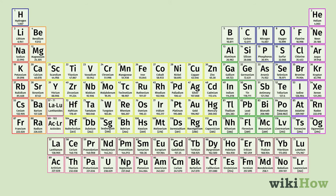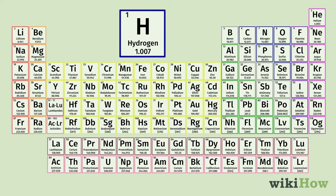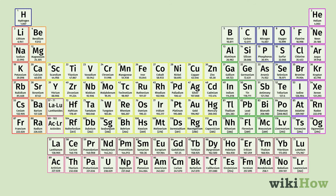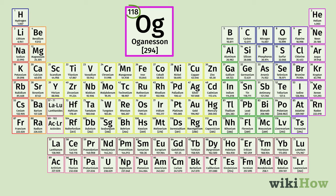Each element has its own atomic number, which represents the number of protons in one atom of the element. For instance, the first element in the periodic table, hydrogen, has an atomic number of 1, because a hydrogen atom has only one proton. At the other extreme, an atom of the synthetic element oganesson has 118 protons and an atomic number of 118.